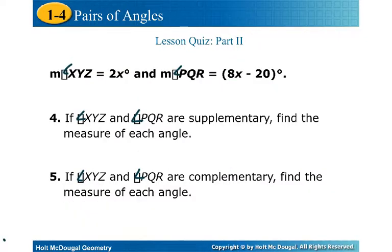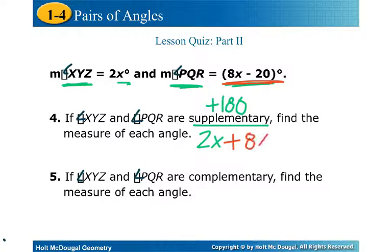The last two examples here uses this measure of angle XYZ is 2x, and the measure of angle PQR is this expression here. Notice that none of the letters are the same. So we aren't talking about adjacent angles. They're not touching at all. We're just talking about two random angles out on a plane somewhere. If these two angles are supplementary, we need to find the measure of each angle. If they're supplementary, they add to 180. Officially, we're taking 2x and adding it to the second angle, which would be 8x minus 20, and that is going to equal the supplementary idea of 180.